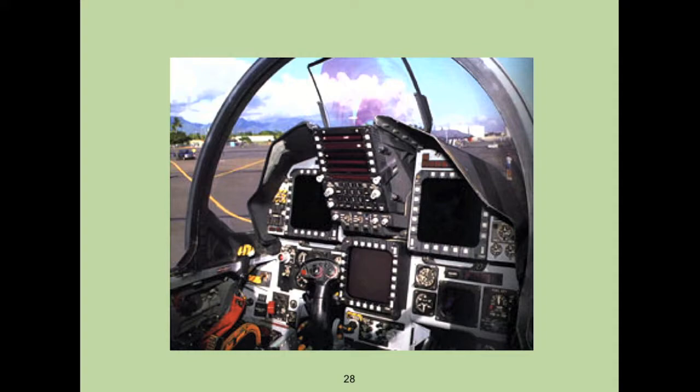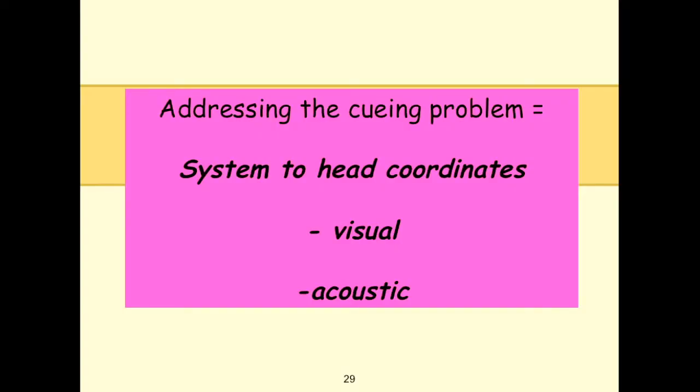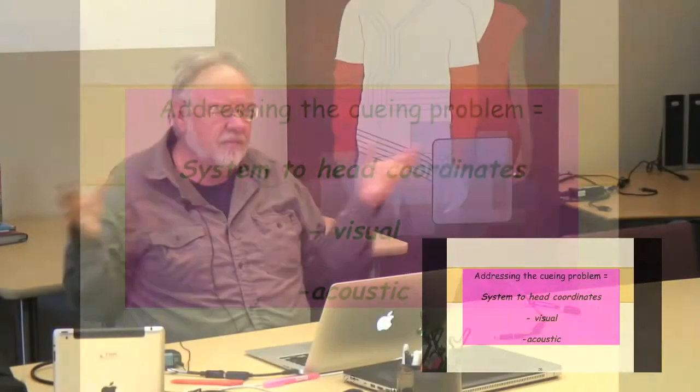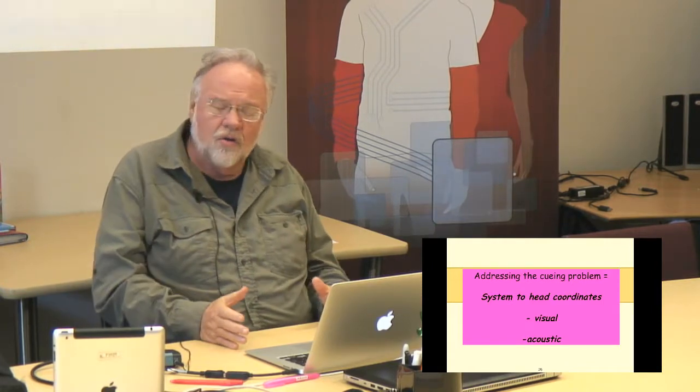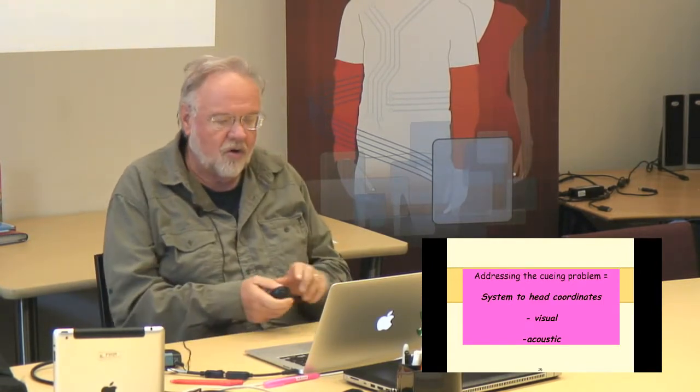One of the problems we were dealing with is that all the sensors on board the aircraft would find things out in the world, but how was that communicated spatially to the pilot? With smaller displays, it wasn't easy to match where things showed up on the display with where they were out in the world. There was this disconnect — a scale factor. Even the head-up display had a limited field of view.